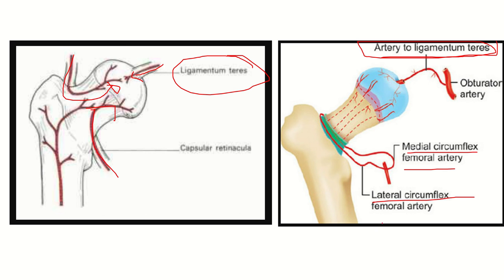The medial circumflex femoral artery and lateral circumflex femoral artery also contribute. The artery to the ligamentum teres arises from an important vessel — the obturator artery. The obturator artery is a branch of the internal iliac artery. So the pathway is: internal iliac artery → obturator artery → artery to ligamentum teres → supplies the head of the femur.